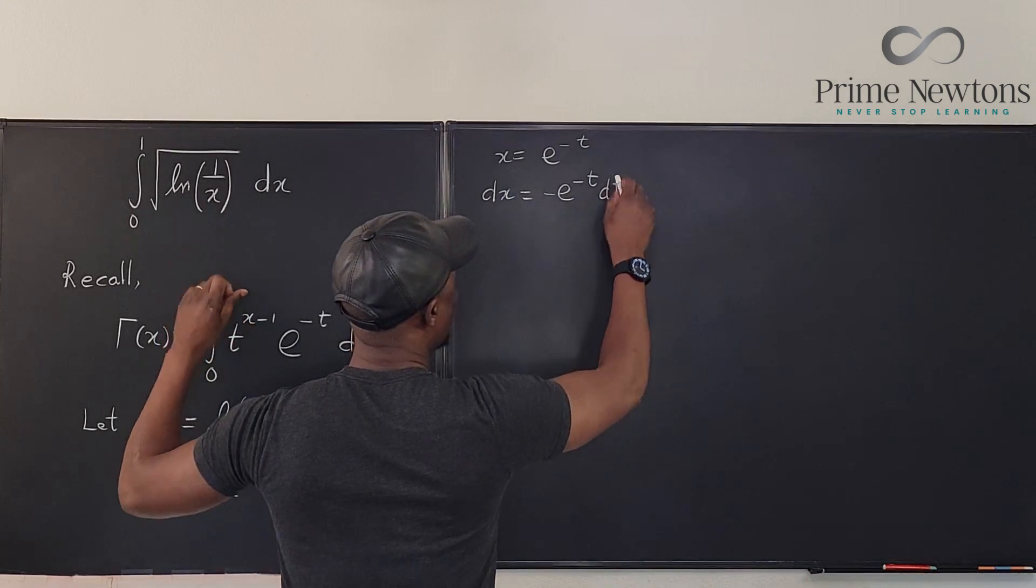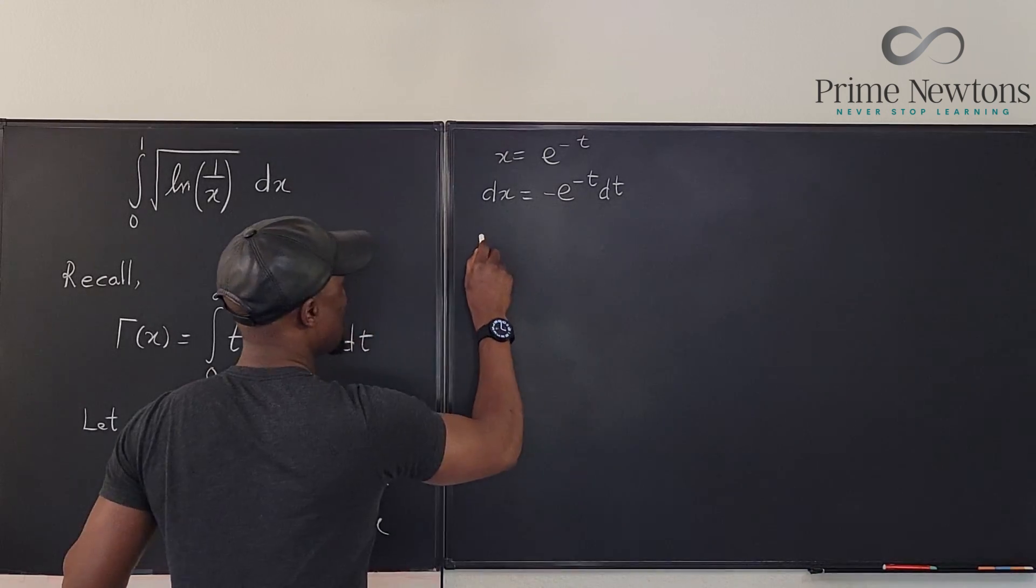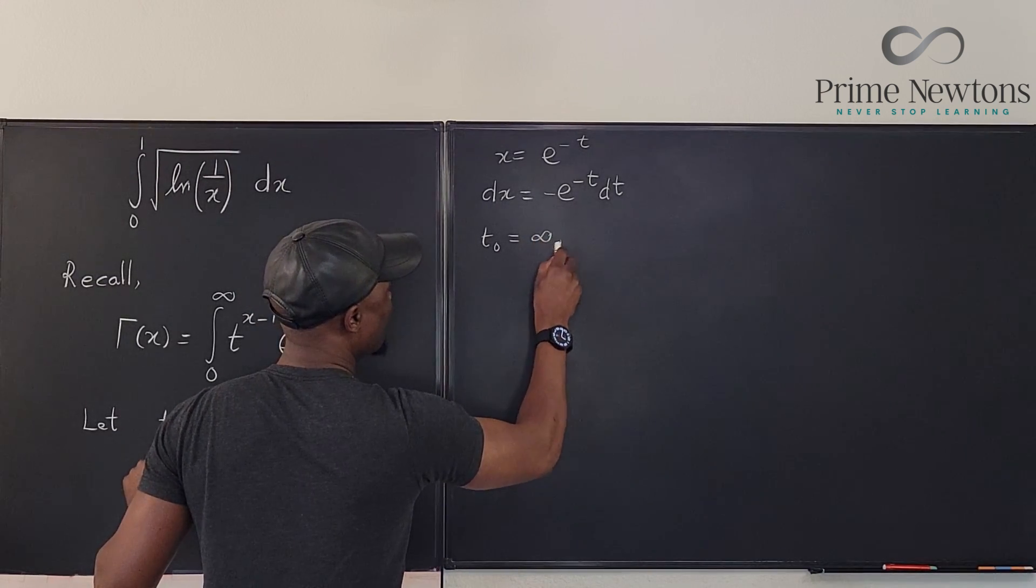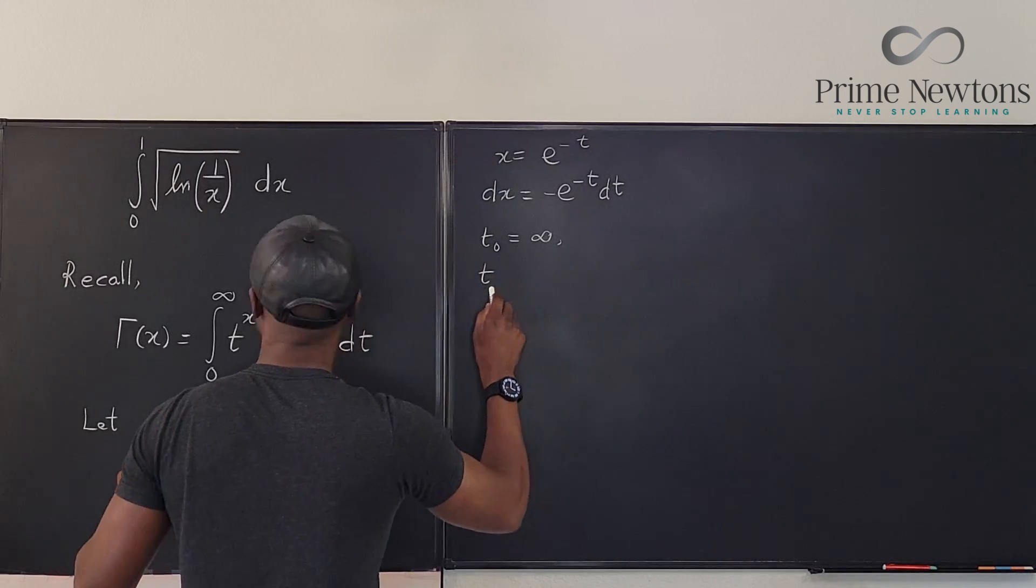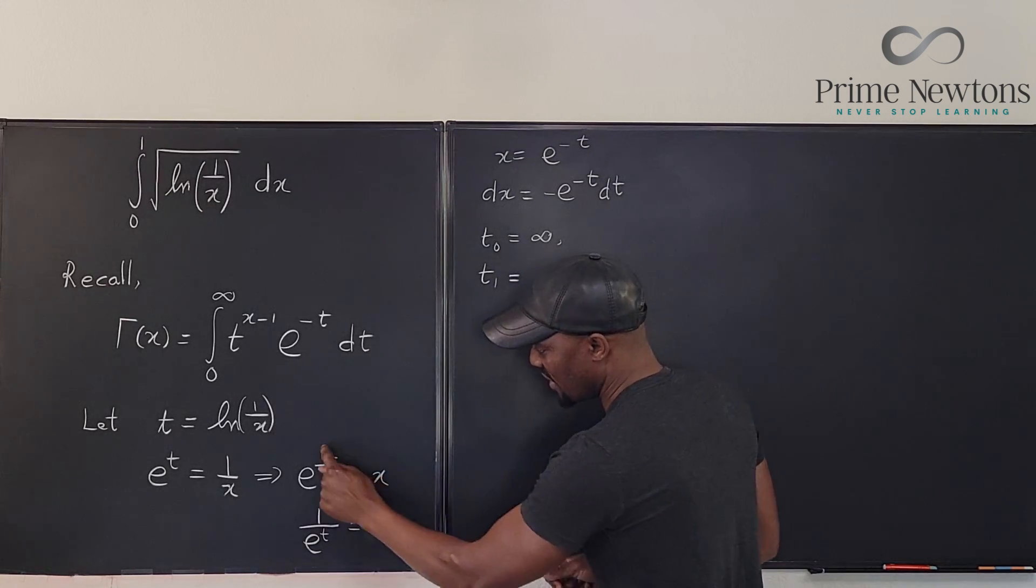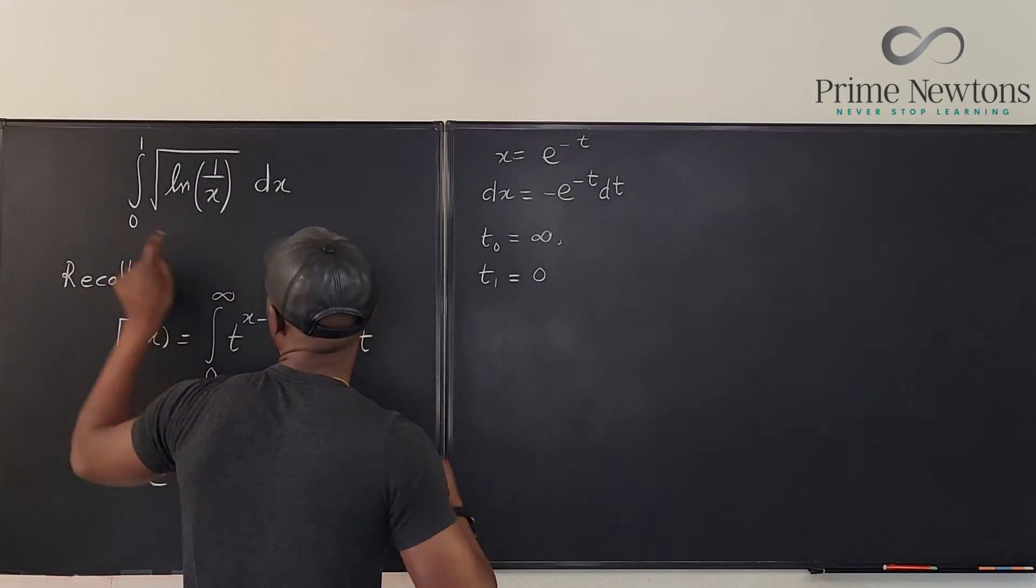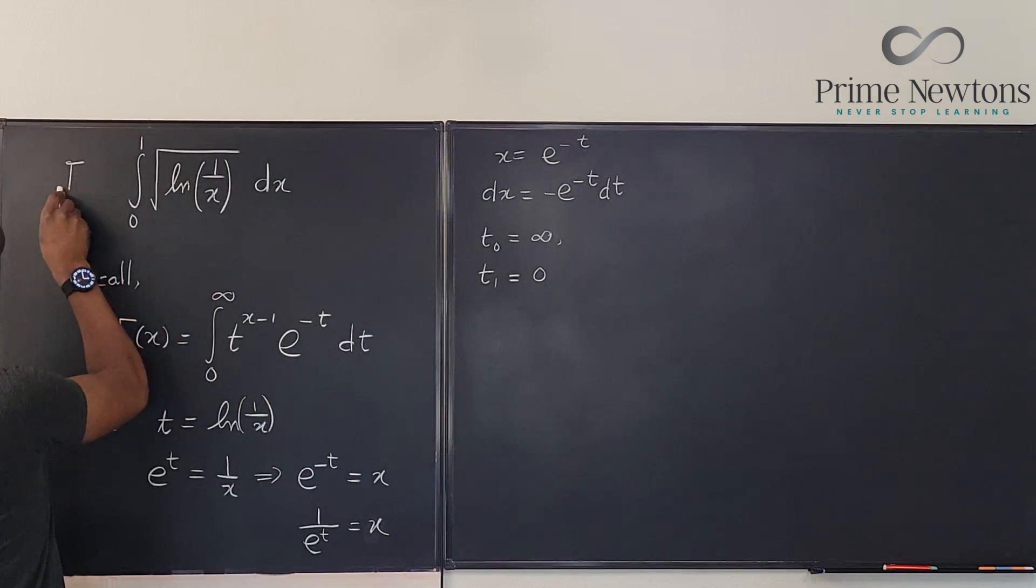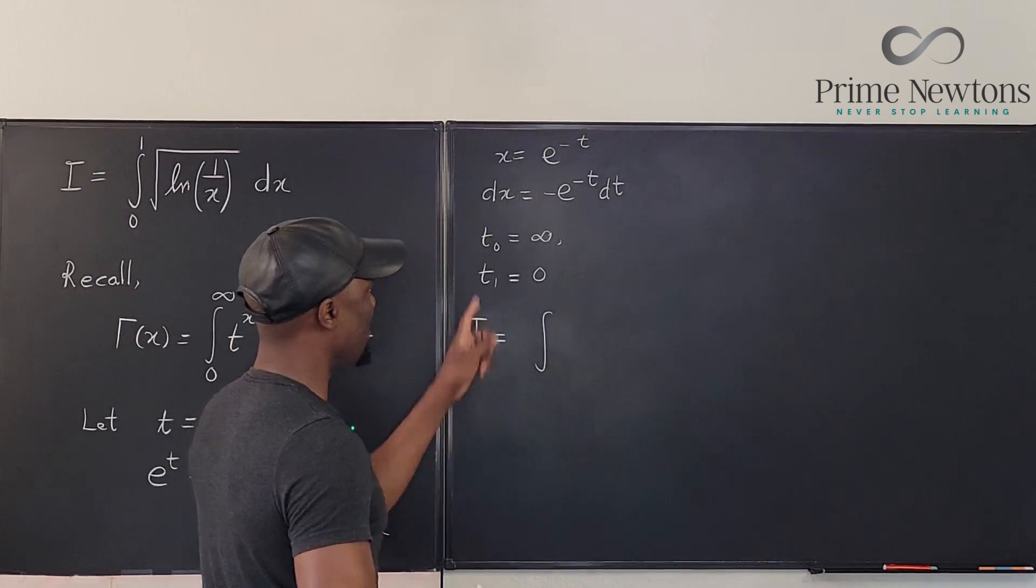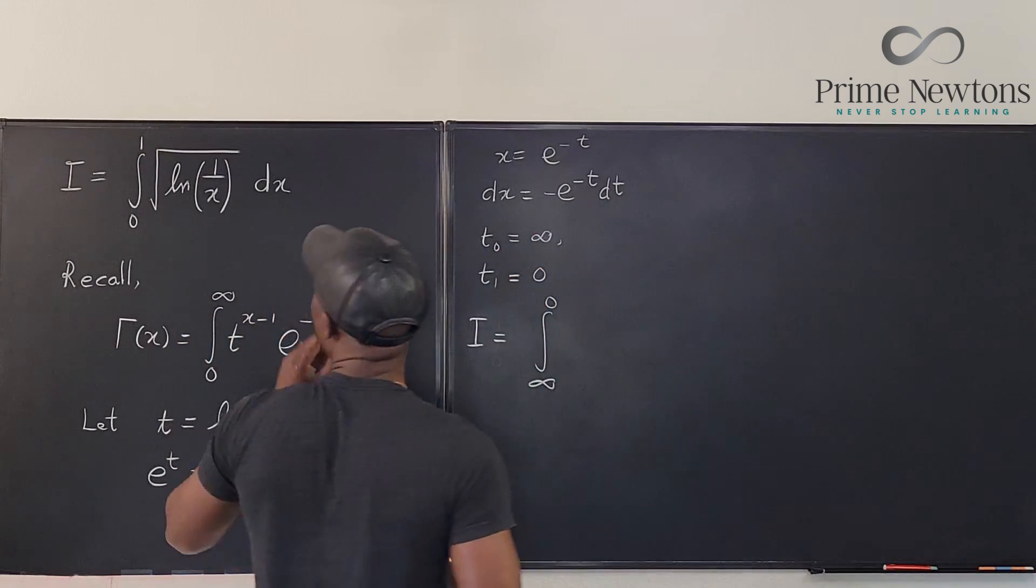So t evaluated at 0 is infinity. And t evaluated at 1 will be, when can this be 1? This is equal to 1 when t is 0. So it means t evaluated at 1 is 0. Okay so we can go ahead and write this integral. Let's call it i and say that i is now equal to a new integral which goes from infinity to 0.